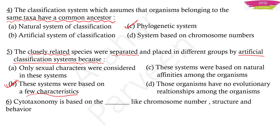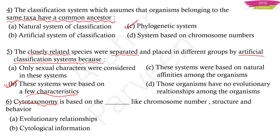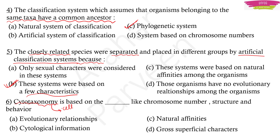Cytotaxonomy is based on chromosome number, structure, and behavior. The options are evolutionary relationships, cytological information, natural affinities, and gross superficial characters. Since cytotaxonomy is talking about the cell, the only term related to the cell here is cytological information — so the answer is cytological information. Please try to answer by yourself first, and if not able to, you can learn the answers.